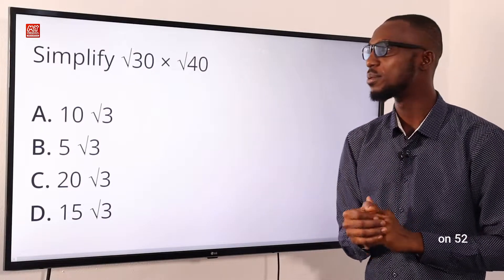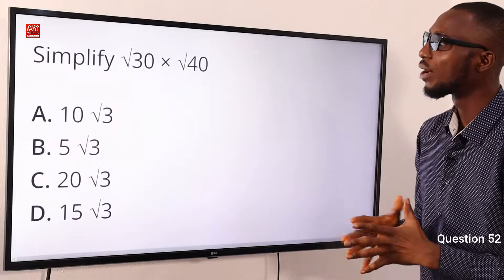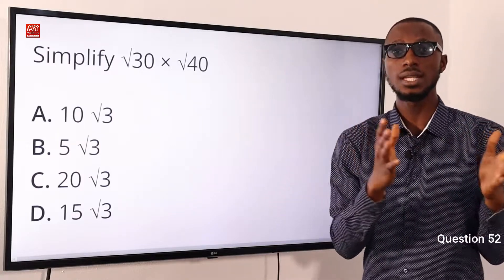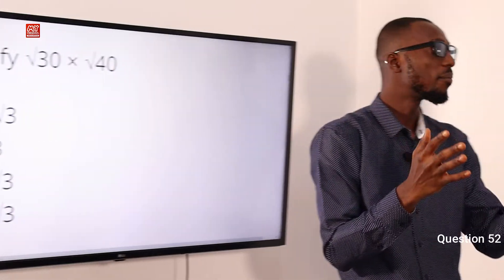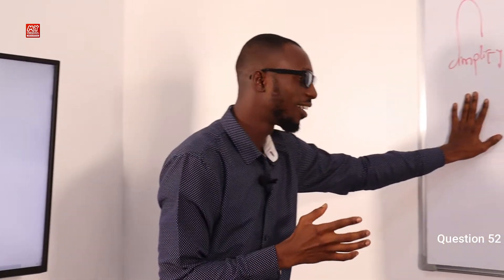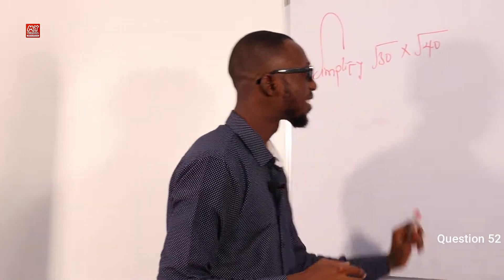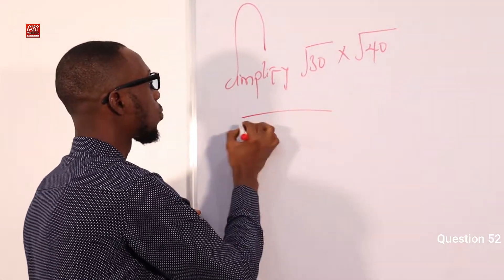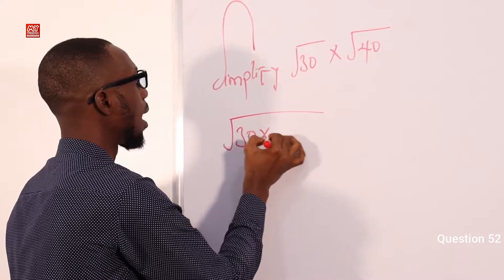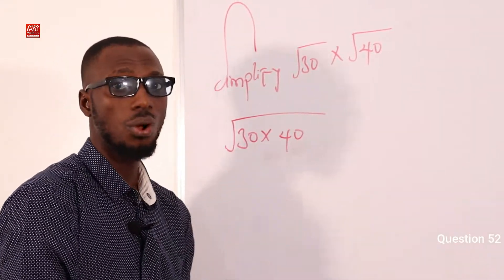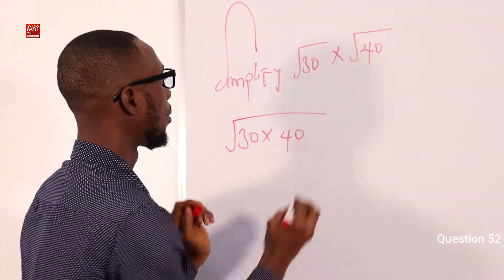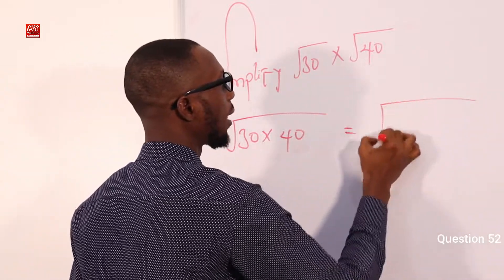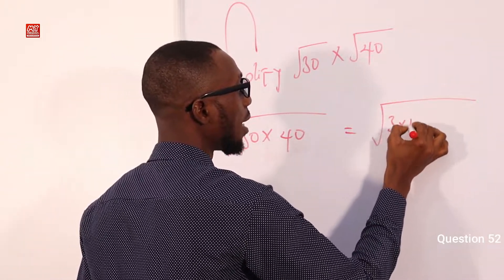We have question 52 to solve: simplify root 30 times root 40. The first thing is to present the question on our whiteboard solution platform. This means the square root of 30 times 40. Remember the rules of surds.